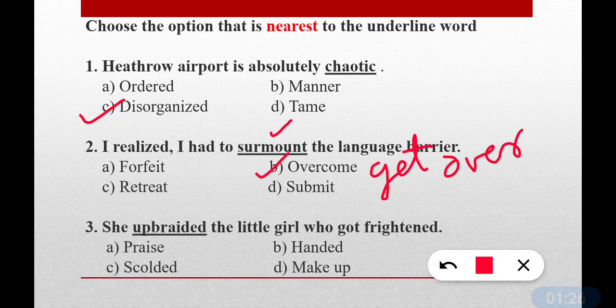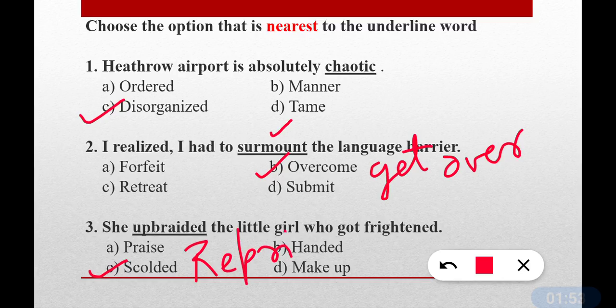Question number three: She upbraided the little girl who got frightened. What is the meaning of 'upbraided'? The correct answer is scolded — option C. In Hindi, it means 'daantna'. Important synonyms include reprimand and rebuke — both are important words.